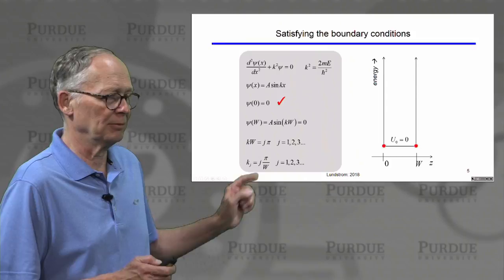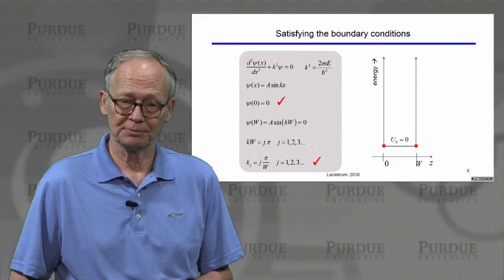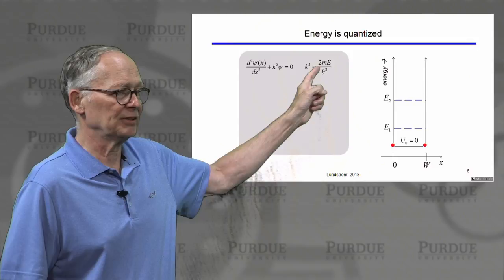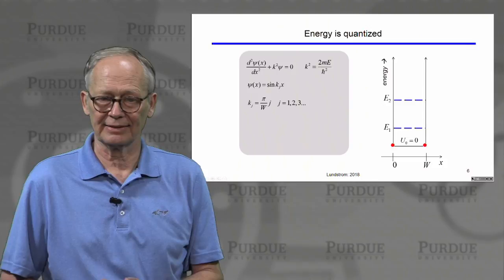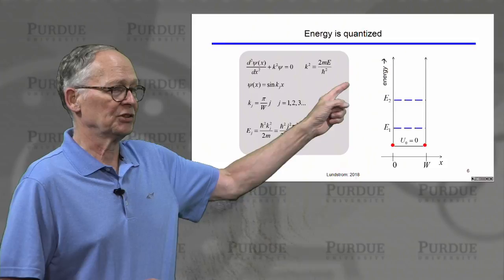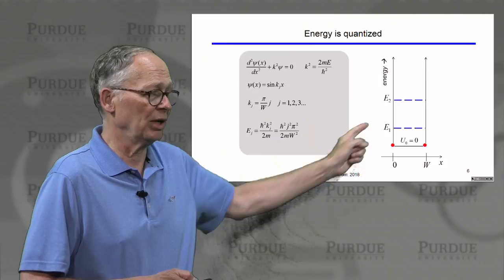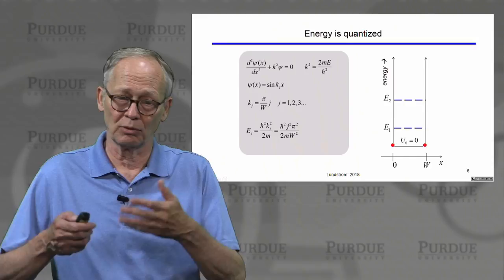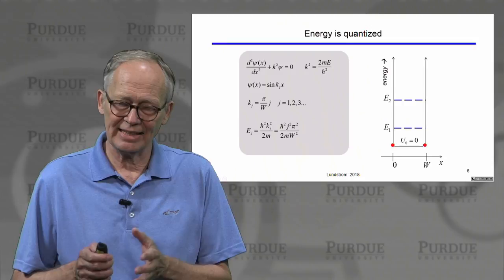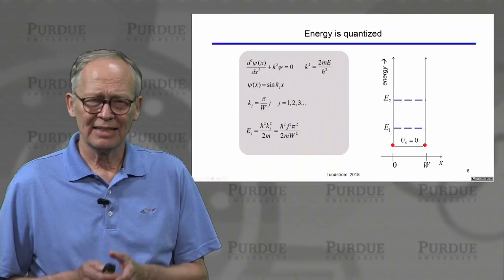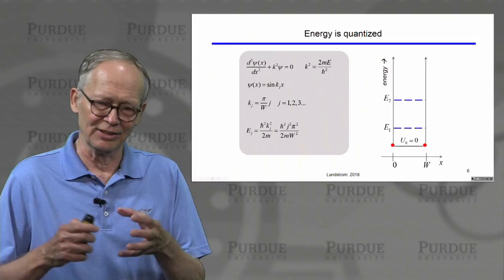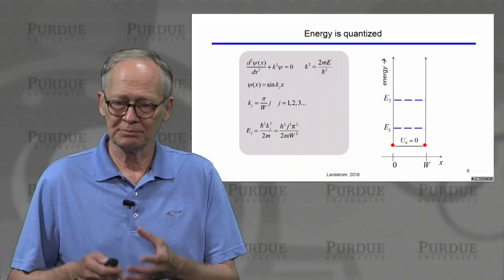Now we've satisfied both boundary conditions. We have our wave equation, a relation between k squared and energy, and we've determined that only certain specific values of k satisfy both boundary conditions. Solving for those specific values of k squared, we find there are only specific, quantized energy levels. This is what's going on in the hydrogen atom too - the Coulomb potential confines the electrons near the positively charged proton, leading to discrete energy levels. The mathematics here is just a lot simpler.